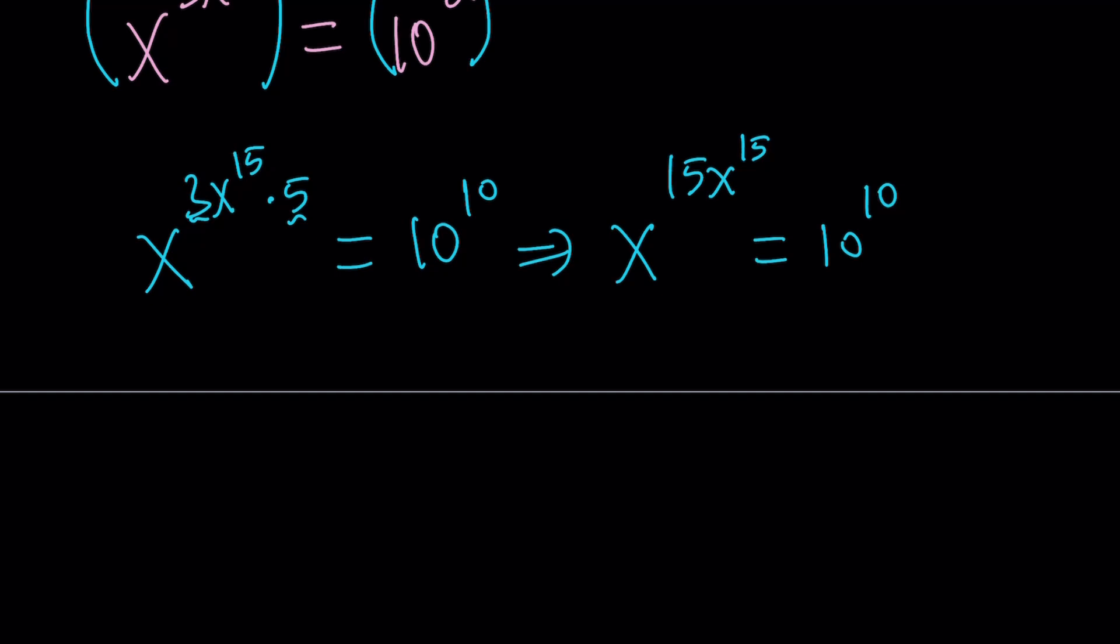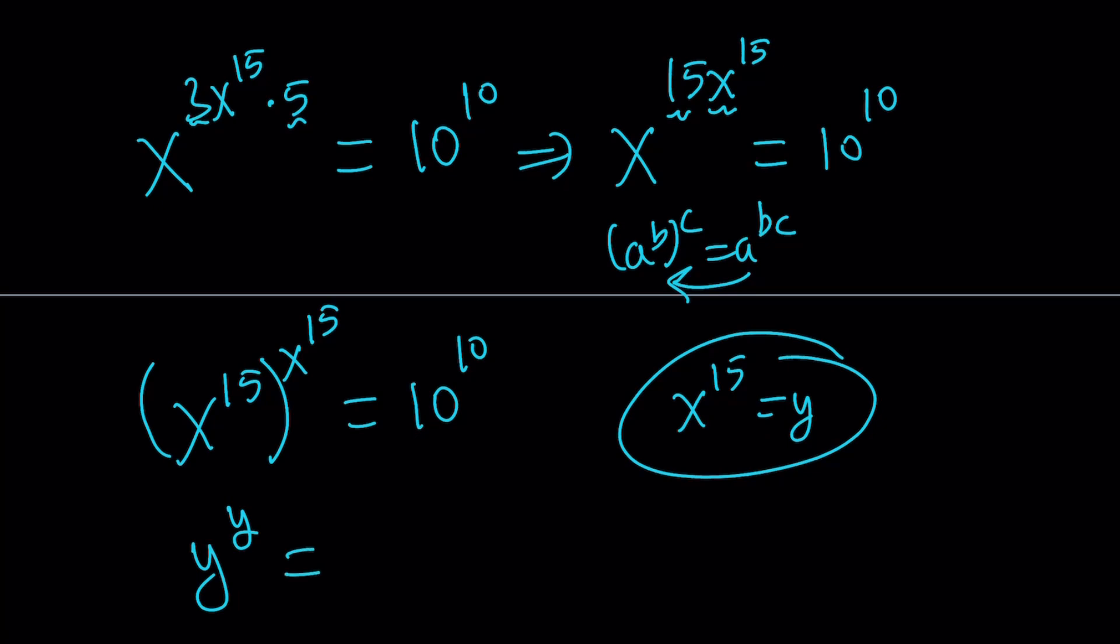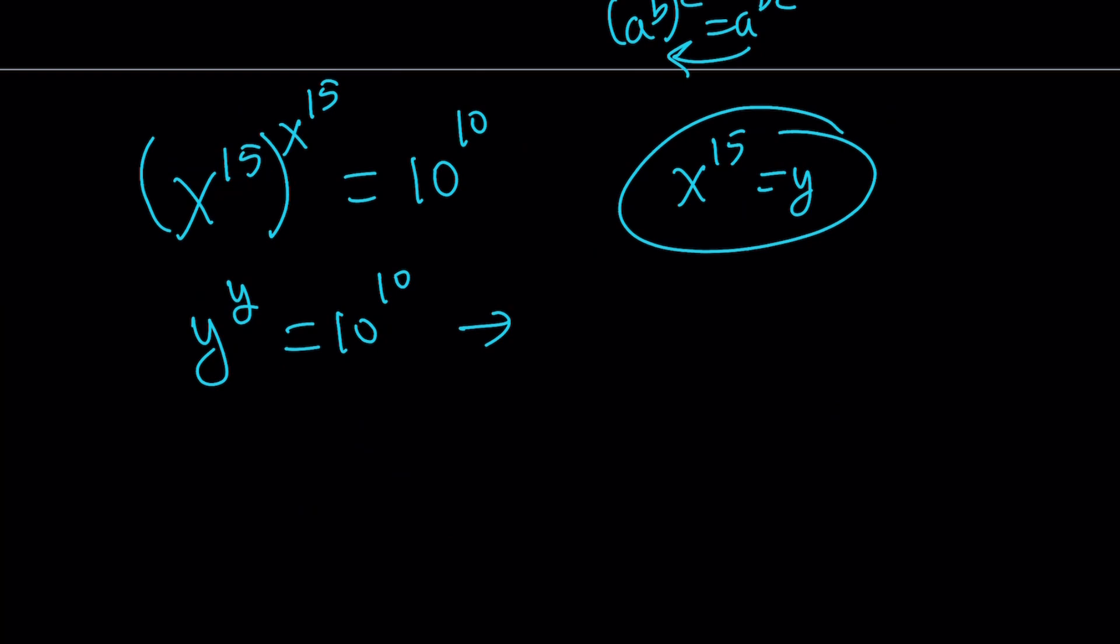Now I can do the following. These two expressions are multiplied. Therefore they are exponents. So I can put the 15 inside the parentheses and write it like this: x to the power 15 to the power x to the power 15 equals 10 to the power 10. In other words I use the property a to the power b to the power c equals a to the power bc or vice versa. And this is really cool because we can replace x to the power 15 with y. And that gives us y to the y equals 10 to the 10. And from here we can basically conclude that y is equal to 10.